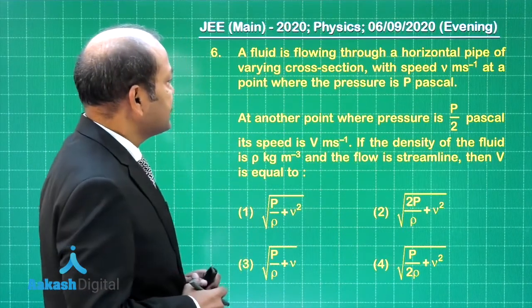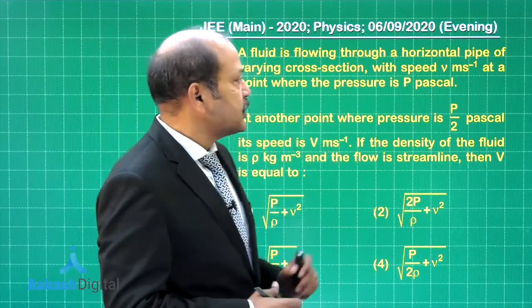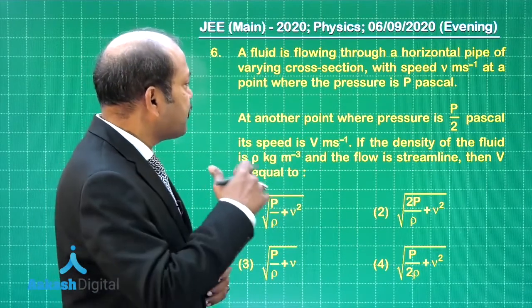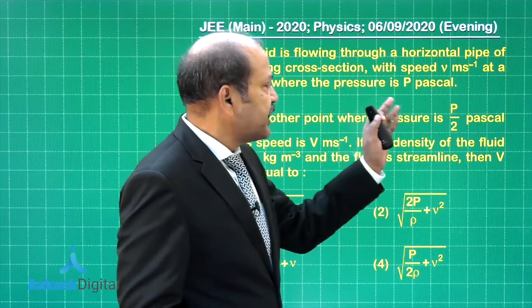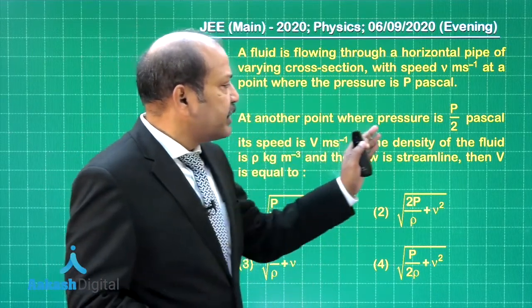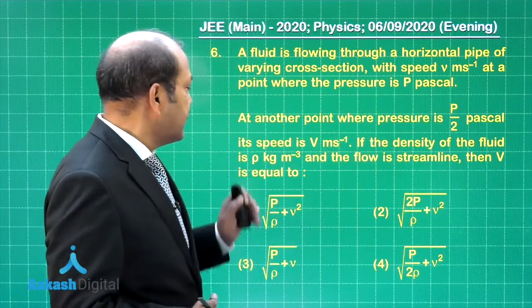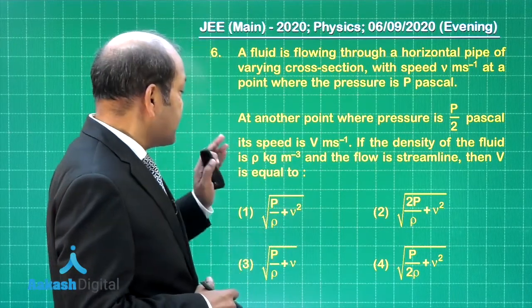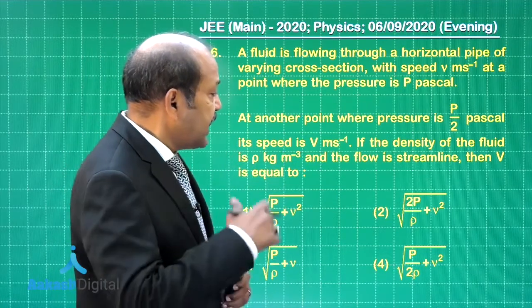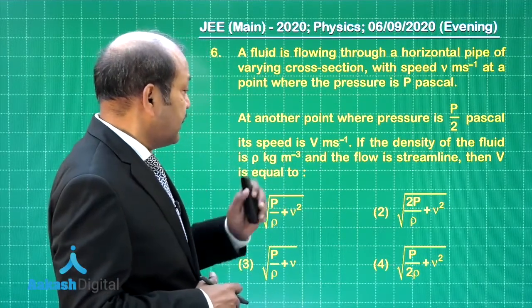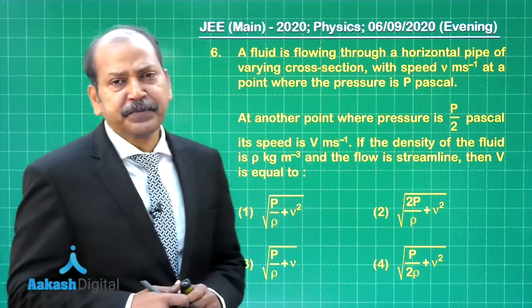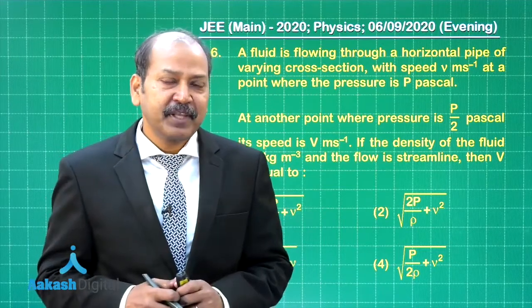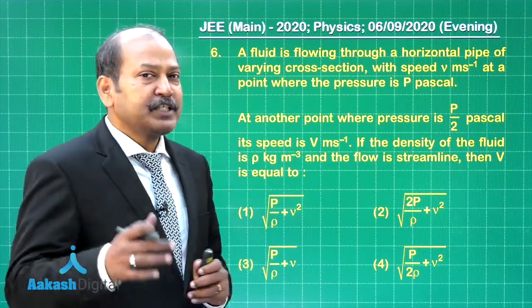And question 6 says, a fluid is flowing through a horizontal pipe of varying cross section with speed v meter per second at a point where the pressure is p pascal. At another point where pressure is p by 2 pascal, its speed is v meter per second. If the density of the fluid is rho kg per cubic meter and the flow is streamline, then v is equal to, the four options are given. The question is from the topic Bernoulli's equation. Let us apply the Bernoulli's equation.